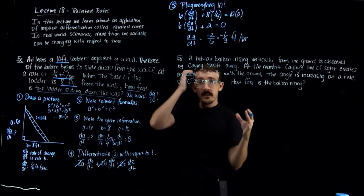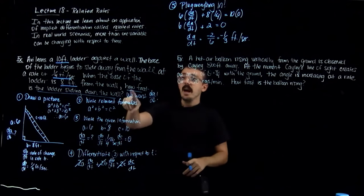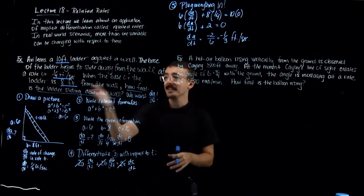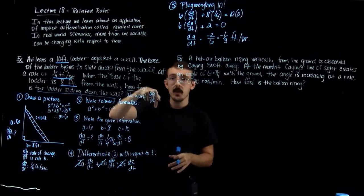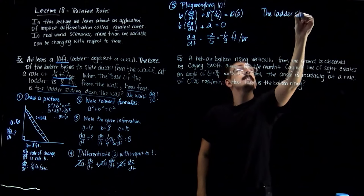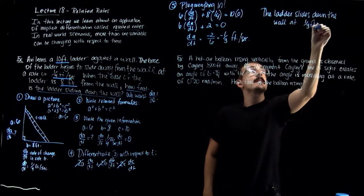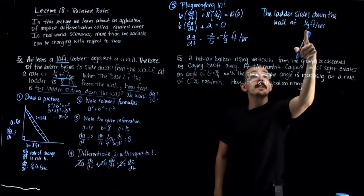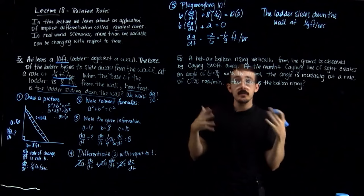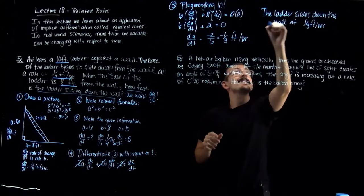Be very careful about the sign of the answer. The question asks how fast is the ladder sliding down the wall — the English has already accounted for the direction. So the answer is: the ladder slides down the wall at 1/3 feet per second. Because I've already specified it's sliding down, I don't need to repeat the negative sign. Don't get tripped up on double negatives.